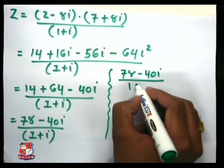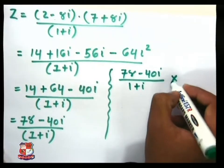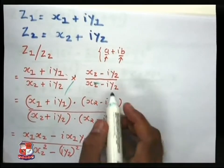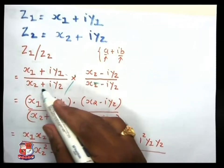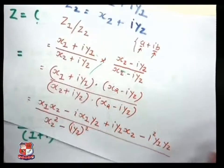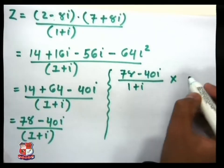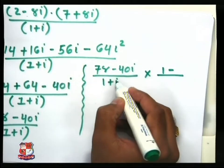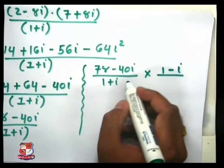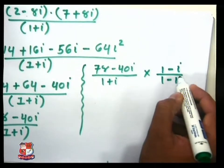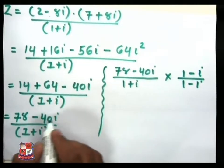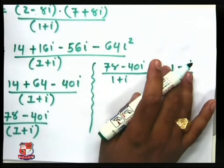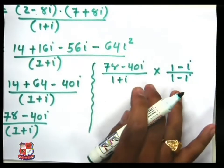Divided by 1 plus i — we multiply with our theory of rationalization of our division term. Here plus sign, then put minus sign. Our result becomes multiplied with 1 minus i, so we have 1 minus i and divide by the same term. This becomes our original equation, to multiply the numerator term and multiply with the denominator term.